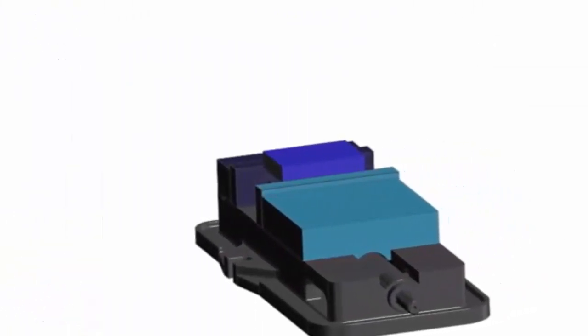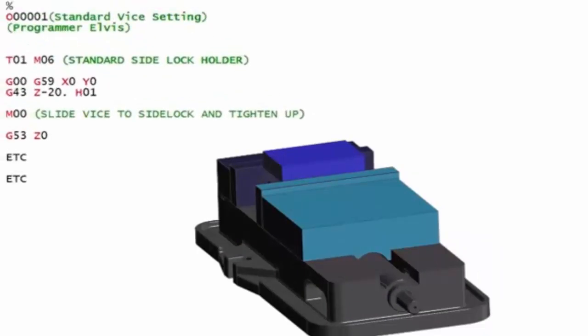Let's have a look at the CNC code for this. You'll see that I've sent it to, I've called out a standard side lock holder. The first time you make these components, you obviously wouldn't know that known position for that vice, but what you would do is you could move that to a position and call it, say for example, G59 X0 Y0.